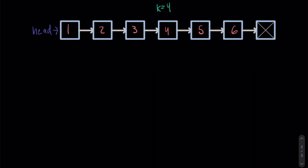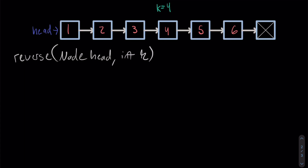Let's jump into the algorithm. I'm going to say we have a method called reverse that takes in a node and also the length of the list that we want reversed, which will just be K. The first thing we're going to do is create a list node called root, and all it's going to do is hold 0 or any value.